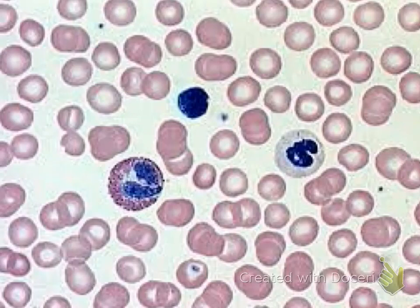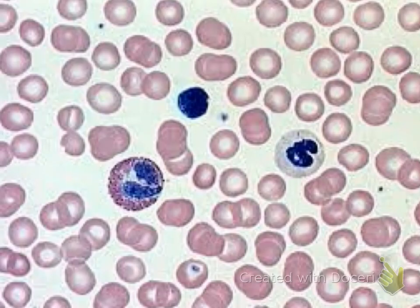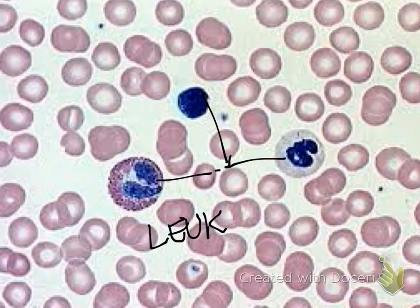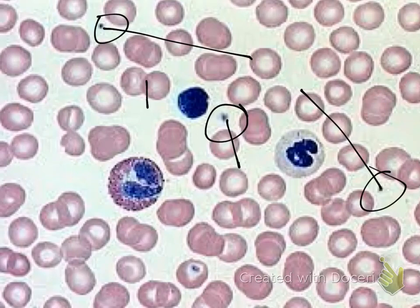The first thing you notice about this tissue are these red disc-shaped structures. These are your erythrocytes. When you see these red blood cells, you are looking at blood tissue. These blue-colored structures are your leukocytes, which are your white blood cells. These tiny little dots you see all around here are your platelets, which are involved in allowing your blood to clot.